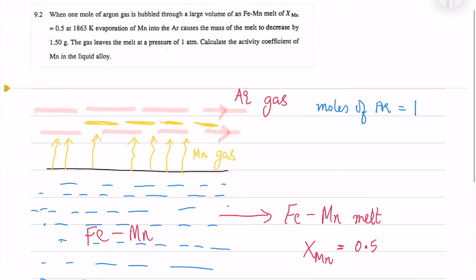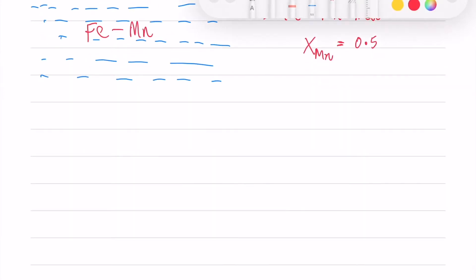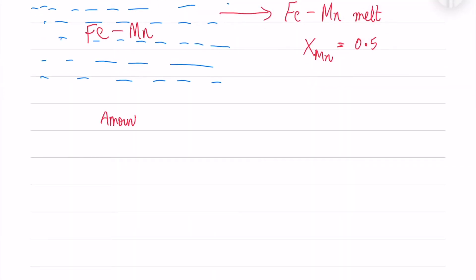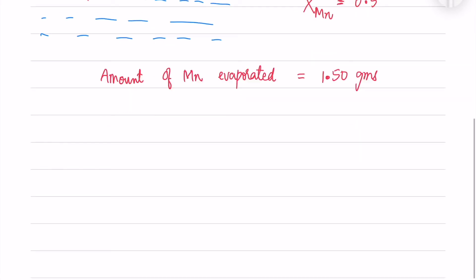The number of moles of argon gas is 1 and the gas leaves the melt at a pressure of 1 atm. Amount of manganese evaporated equals 1.50 grams.